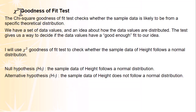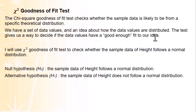This video is about the chi-square goodness-of-fit test. The chi-square goodness-of-fit test checks whether the sample data is likely to be from a specific theoretical distribution. We have a set of data values and an idea about how the data values are distributed. The test gives us a way to decide if the data values have a good enough fit to our idea.